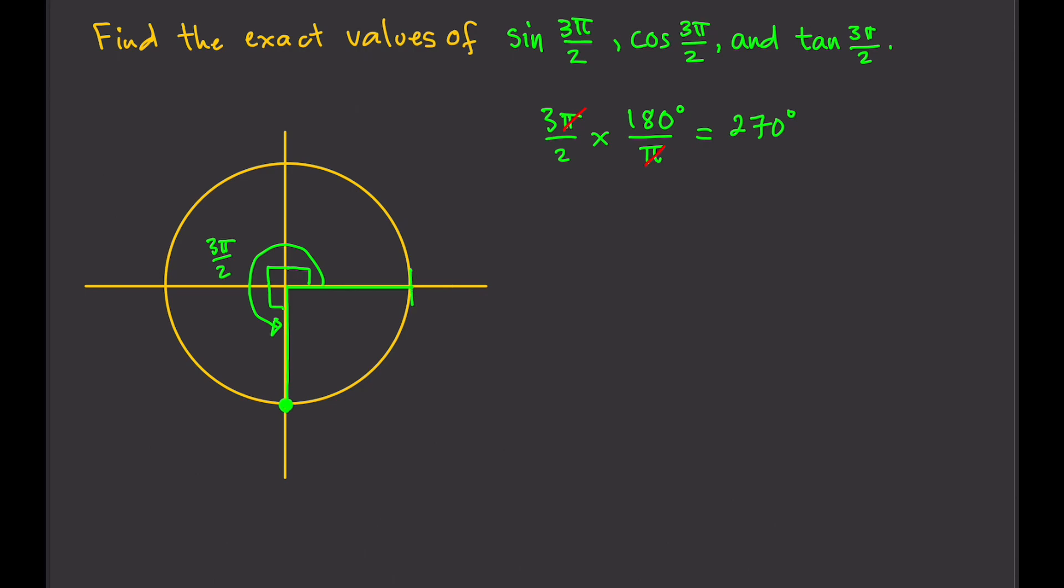Since this is a unit circle, this is 1, this is 1, this is negative 1, and this is negative 1. So we know the y-coordinate of the point, the y-coordinate is negative 1, and the x-coordinate is 0. We know that exactly, so we don't have to construct a right triangle to find the coordinates.